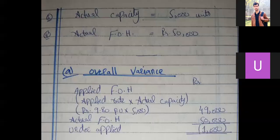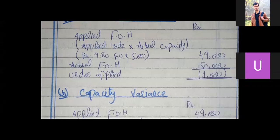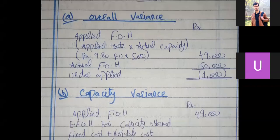Actual capacity is 5,000 units and actual FOH is Rs. 50,000. To find the overall variance, applied FOH is placed against actual FOH. Applied FOH equals applied rate multiplied by actual capacity: 9.8 per unit times 5,000 units gives Rs. 49,000. The actual FOH incurred is Rs. 50,000. That means there is Rs. 1,000 under-applied.